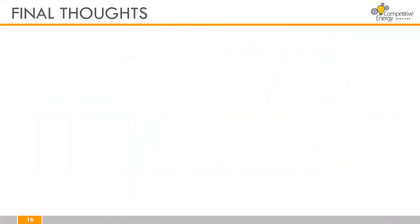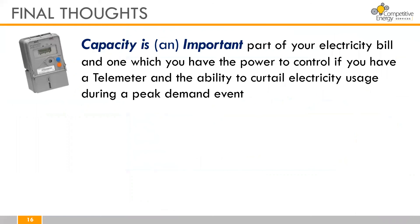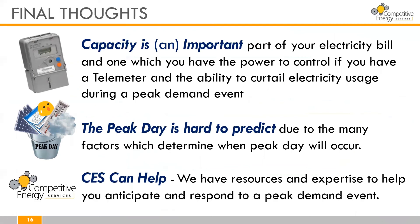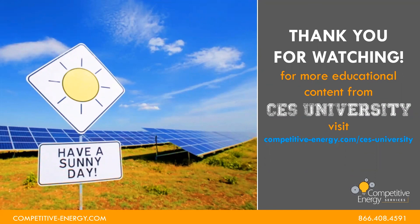Here are some key takeaways from this presentation. First, capacity is an important part of your electricity bill, and it's one which you have the power to control if you have a telemeter and the ability to curtail electricity usage during a peak demand event. Second, the peak day is hard to predict, due to many factors which determine when it will occur. And lastly, CES can help — we have the resources and the expertise to help you anticipate and respond to a peak demand event. Thank you for watching, and for more educational content from CES University, you can visit competitive-energy.com/CES-University. Stay safe and enjoy your summer.